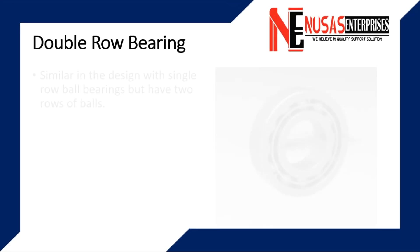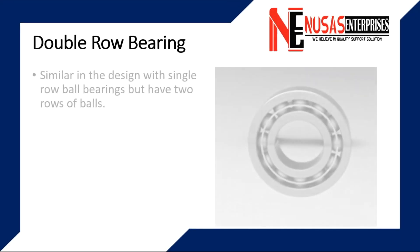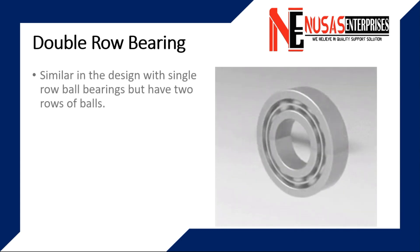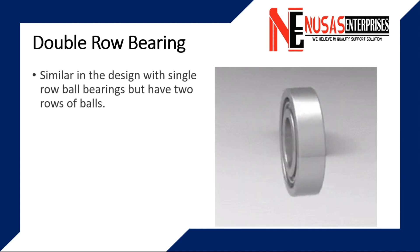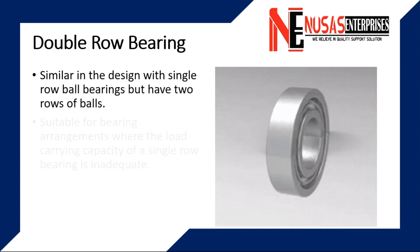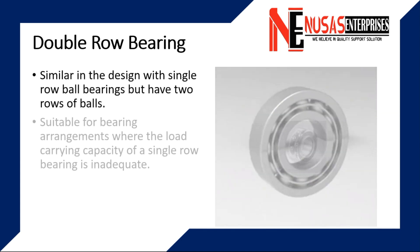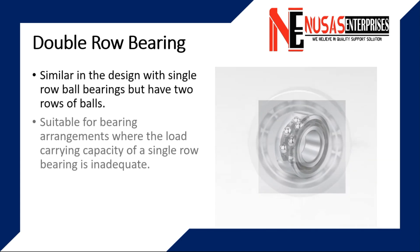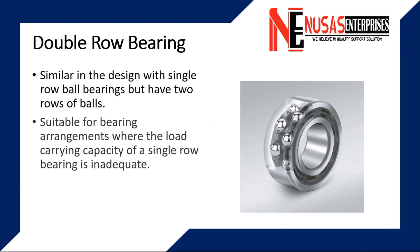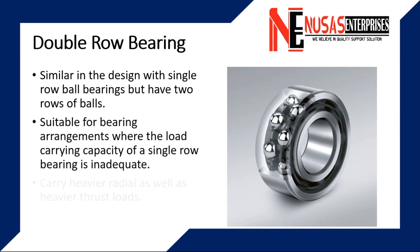Double row bearings are similar in design to single row ball bearings, but have two rows of balls. These bearings are very suitable for bearing arrangements where the load carrying capacity of a single row bearing is inadequate. They can carry heavier radial as well as heavier thrust loads.